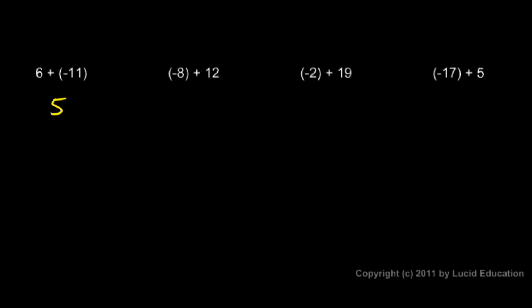And then I give my answer the same sign as the number out of these two which has the largest absolute value. And 11 is bigger than 6, and 11 here is negative, so my result is negative — negative 5. And that's my answer. 6 plus negative 11 is negative 5.